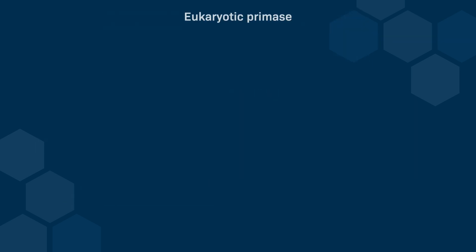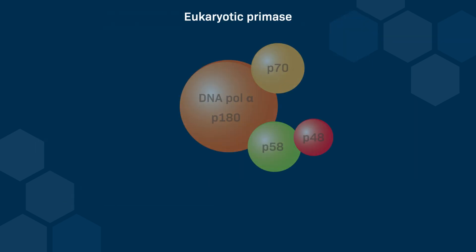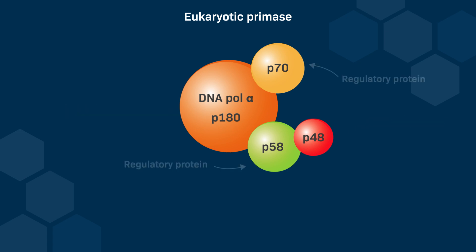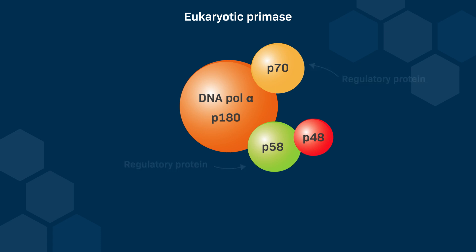In eukaryotes, RNA primase is a multi-protein complex. The complex includes two main polymerases: an RNA polymerase called p48 and the DNA polymerase alpha, also called p180. Alongside these polymerases, regulatory proteins p70 and p58 are also integral components of the complex. Structurally, the primer is chimeric, which means it comprises both RNA and DNA segments.